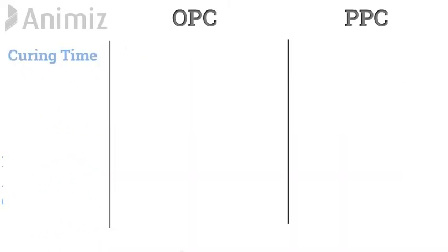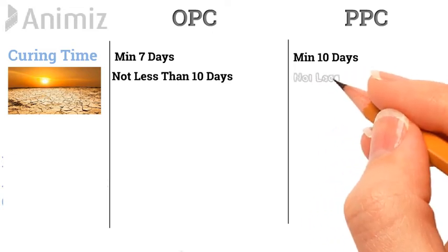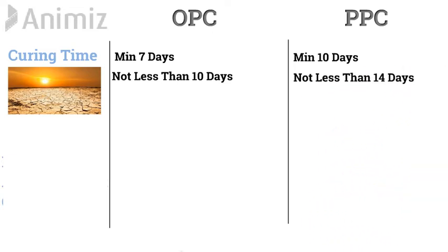Curing Time: OPC requires a minimum curing period of 7 days, whereas PPC requires a minimum curing period of 10 days. When OPC is exposed to hot and dry weather conditions, the minimum curing period required shall not be less than 10 days. Whereas, when PPC is exposed to hot and dry weather conditions, the minimum curing period required shall not be less than 14 days.